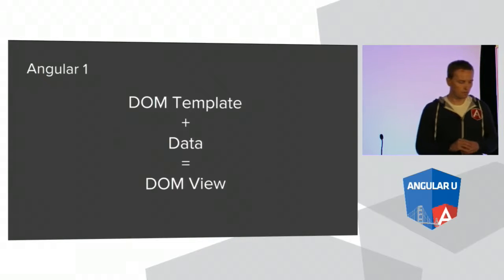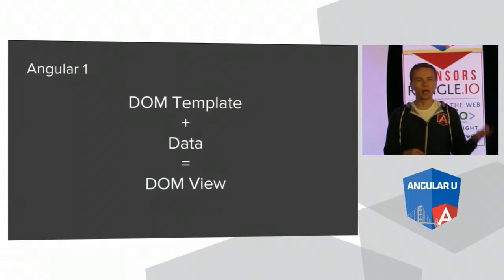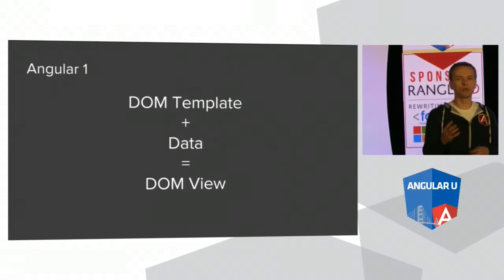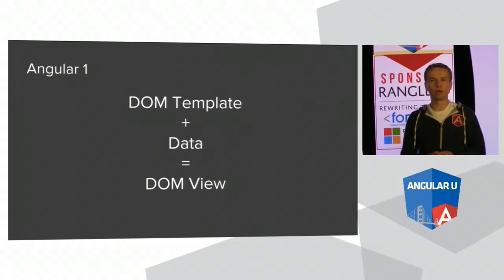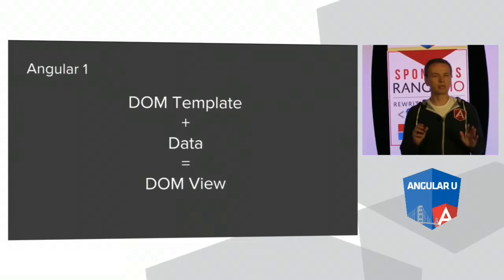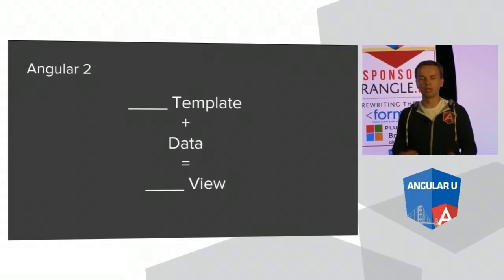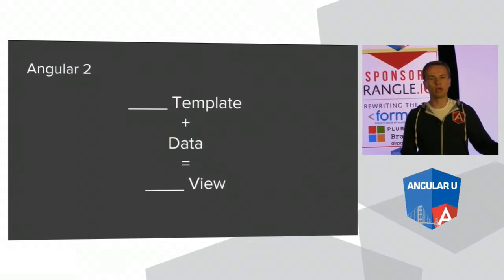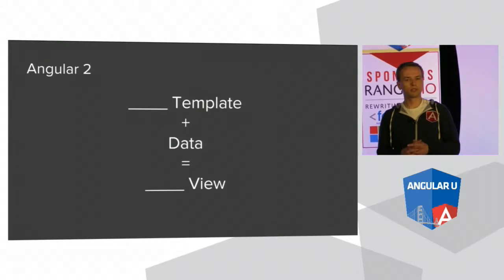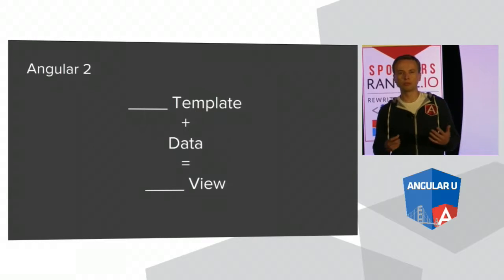This big change — the separation of the renderer — forces us to update the mental model about Angular. In the past, Angular took a DOM-based template with declarative instructions, applied them to data, and generated a DOM-based view. In Angular 2, we have much more flexibility. Not only can we target DOM — which we expect to still be the main target platform — but now we have the flexibility to also target native Android and iOS directly via NativeScript or React Native. Additionally, there are other potential uses: we can now render directly into Canvas, maybe WebGL, and I'm curious to see what you guys will come up with.